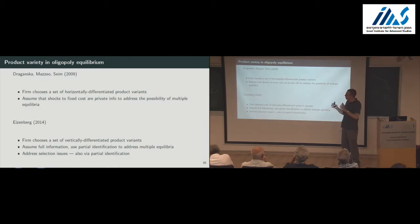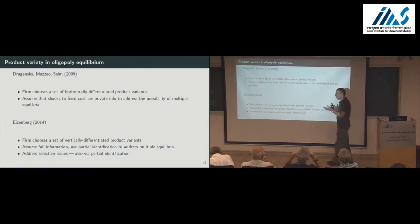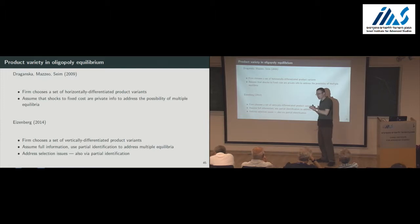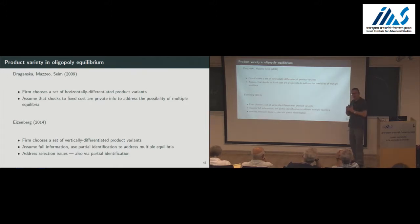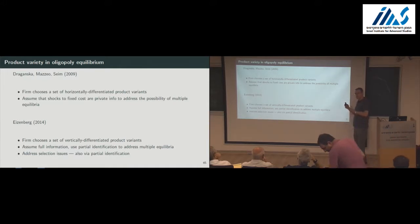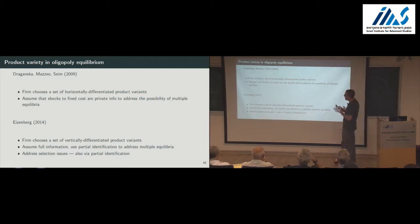I would also try to qualify that statement a little bit, because while the theory tells us that things could go either way, I think we still need more theory work that will provide even more specific information about what exactly we should look for in the data — even in raw data — that will be consistent with either over-provision or under-provision of quality, variety, et cetera. A lot of these theory papers, including the ones I reviewed, look at a monopoly or monopolistic competition, but what about oligopoly? Things become much more complicated.